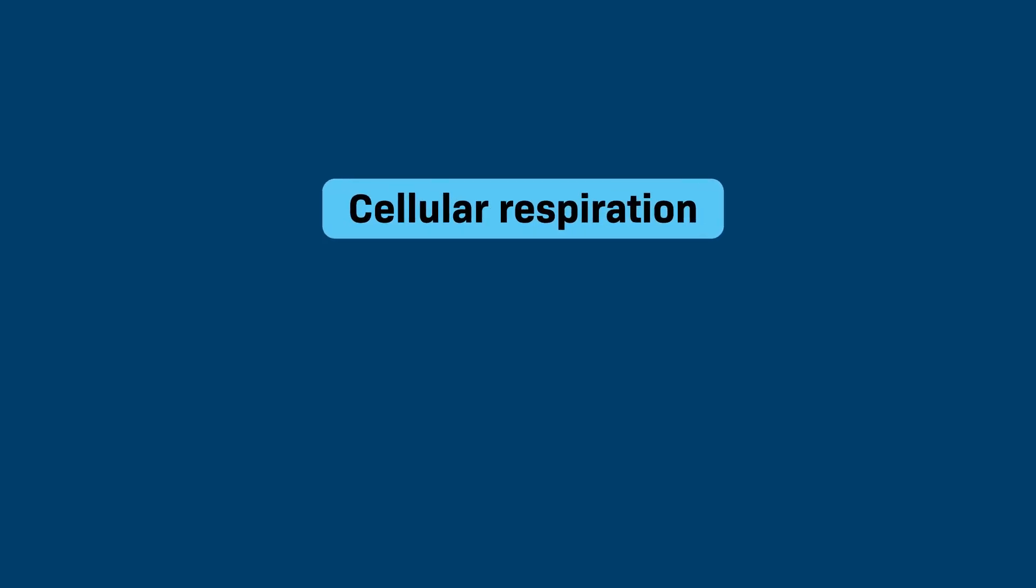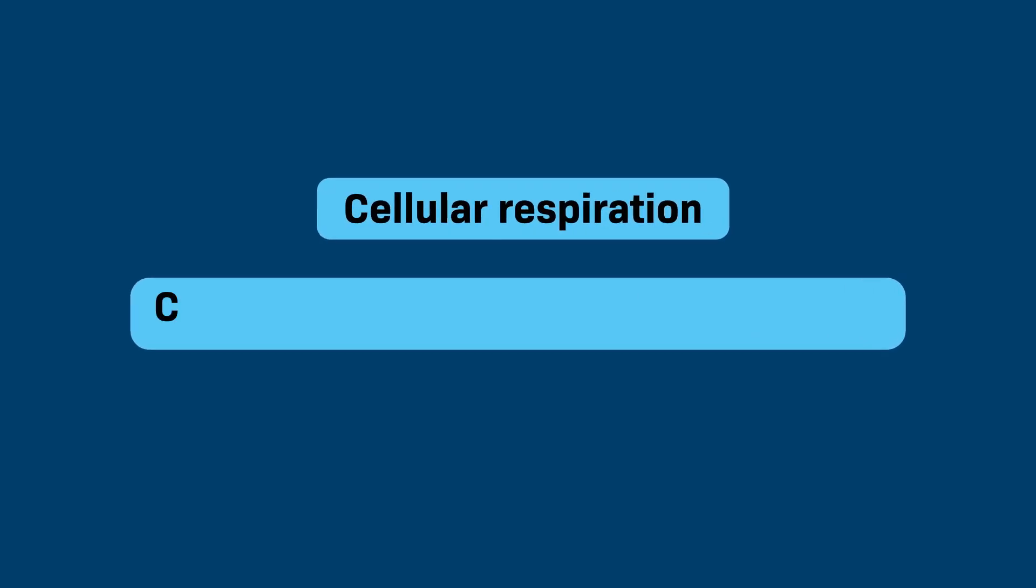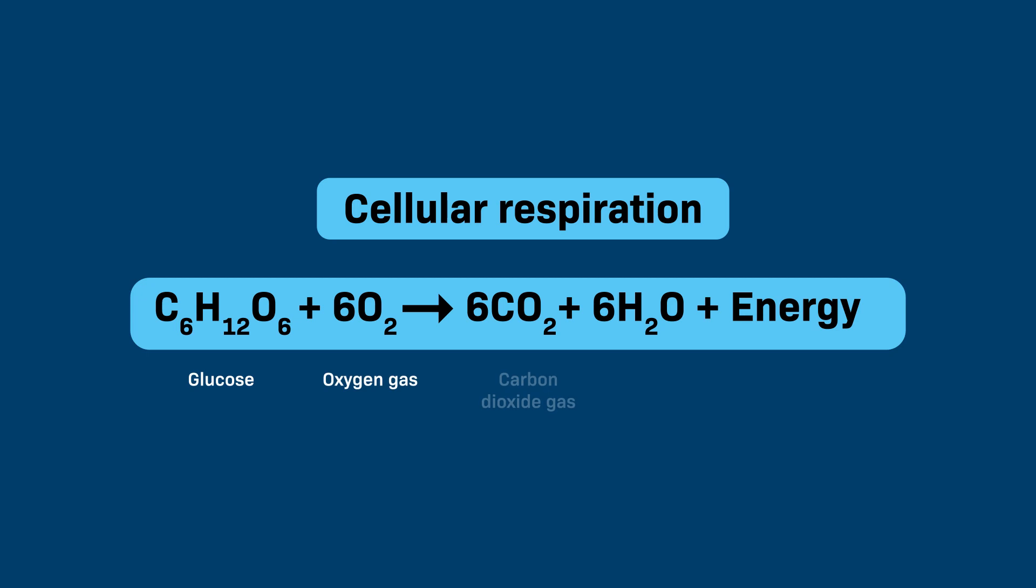That usable energy is namely in the form of a molecule called adenosine triphosphate, or ATP for short. The chemical equation of cellular respiration is C6H12O6 plus 6O2 yields 6CO2 plus 6H2O plus energy. In other words, glucose and oxygen gas go in, and carbon dioxide gas, water, and ATP come out.